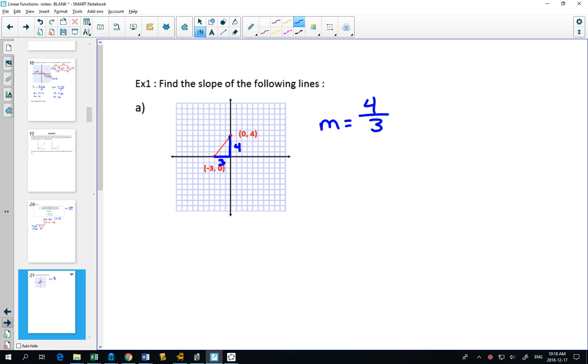If you wanted to use the formula, you have to pick one of them as your first point. It doesn't matter which you pick as your first or second point. The math will work out the same. So if I choose this as X1 and Y1, and this is X2 and Y2, and I use my slope formula, which is Y2 minus Y1 over X2 minus X1. 4 minus 0 is 4. 0 minus a negative 3 is positive 3.